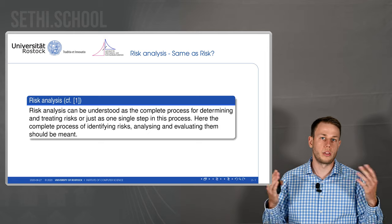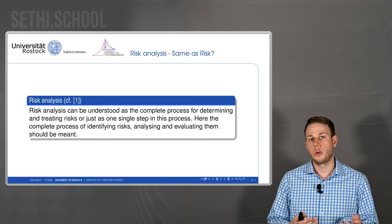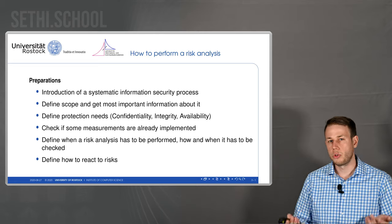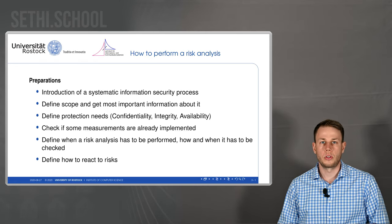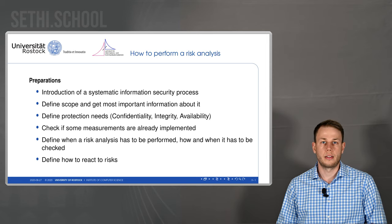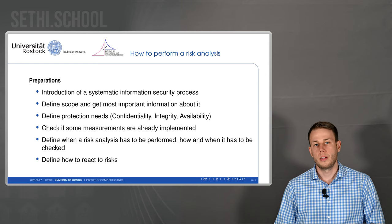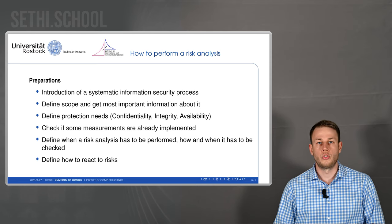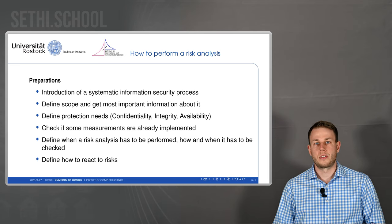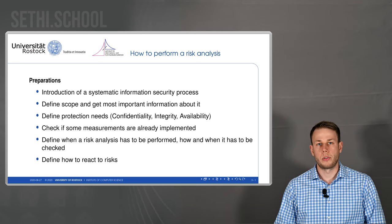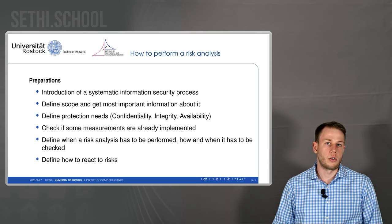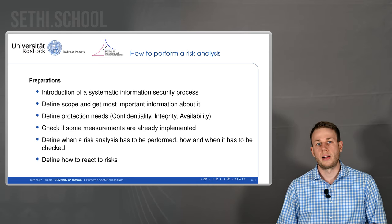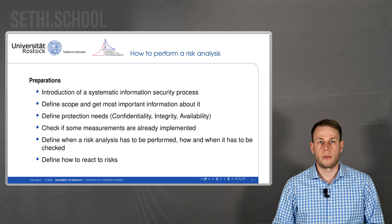So we want to look at the whole process: how can we identify risks, how can we determine how bad or how good they are, and how we have to treat them. I had a look in the literature — specifically the BSI 200 standard, from the German Bundesamt für Sicherheit in der Informationstechnik, a German organization responsible for security in information technology that hands out standards. They are available in German and in English, so don't worry if you find the source in German.